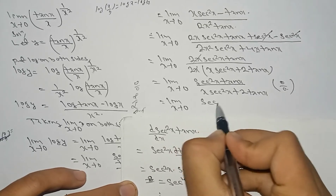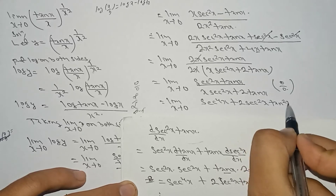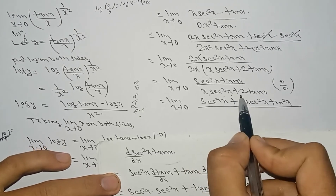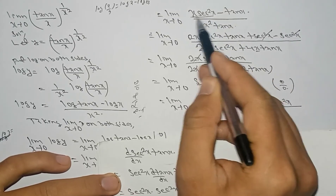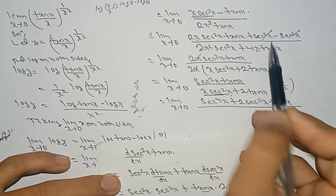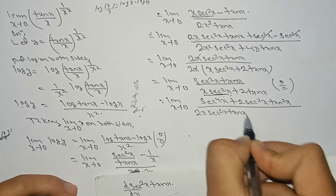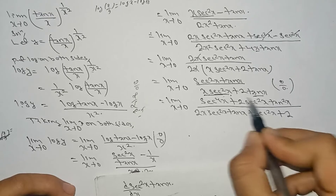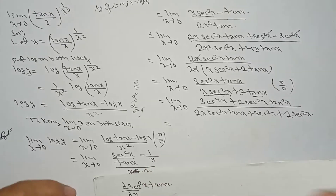So the numerator becomes sec⁴x + 2·sec²x·tan²x. For the denominator x·sec²x + 2·tan x: the derivative of x·sec²x was already found as 2x·sec²x·tan x + sec²x, and the derivative of 2·tan x is 2·sec²x. So the denominator derivative is 2x·sec²x·tan x + sec²x + 2·sec²x.